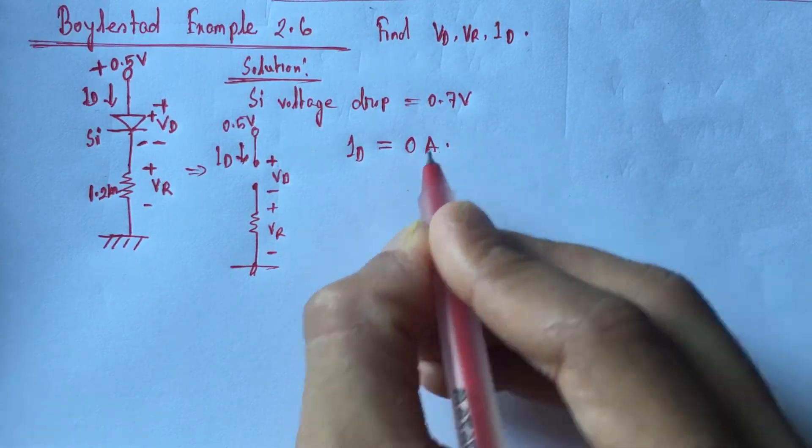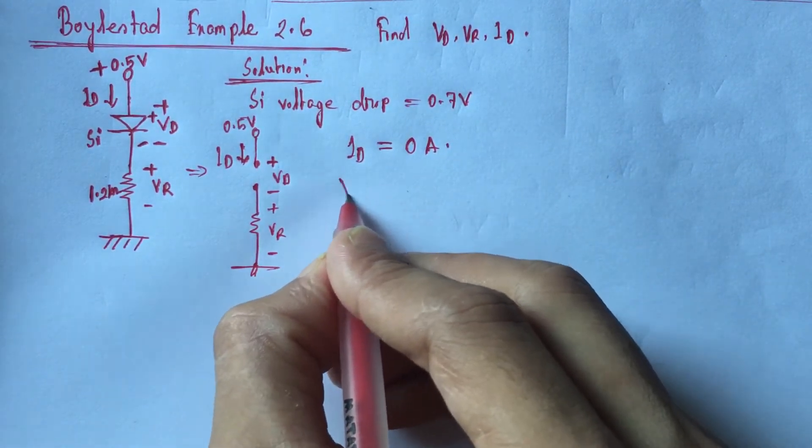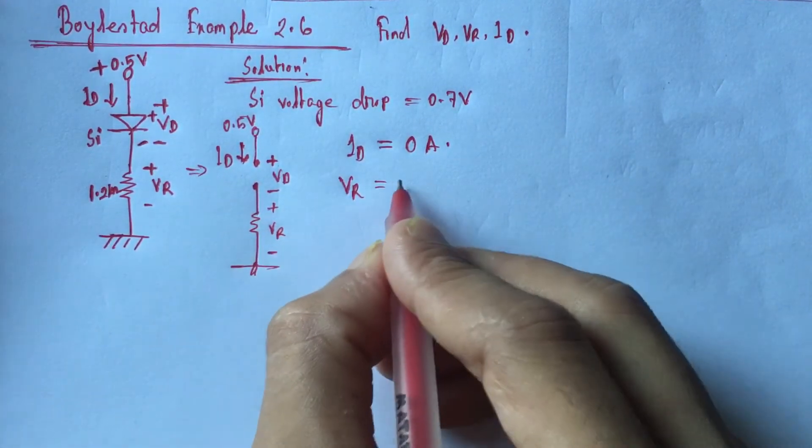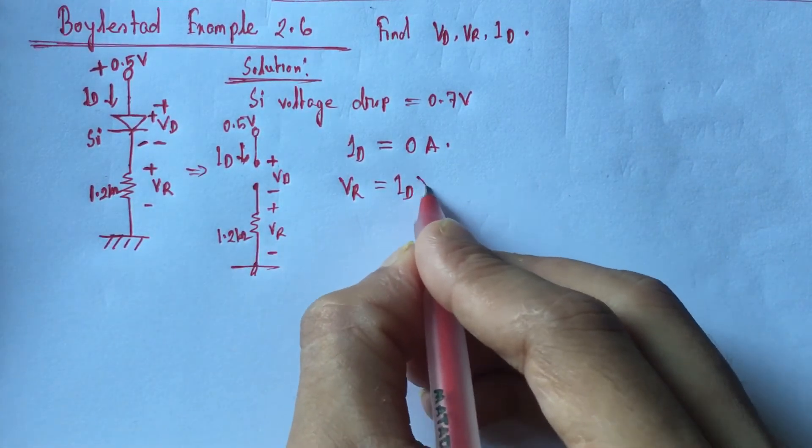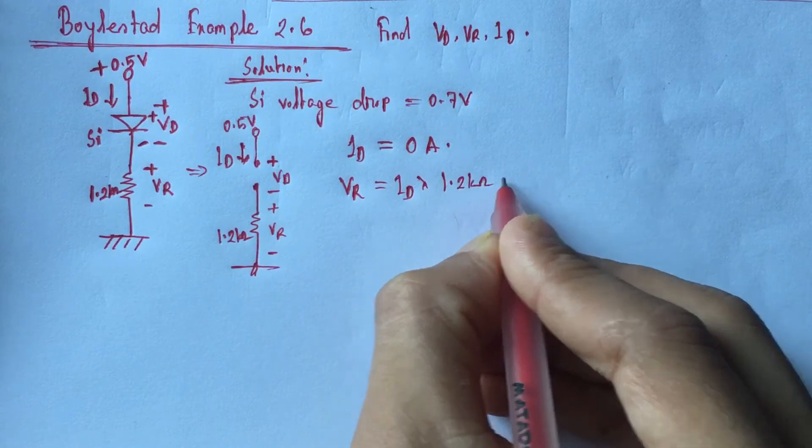Now we know that VR is equal to ID into 1.2 kilo ohm. Now since ID is 0, so this is also 0 volt.